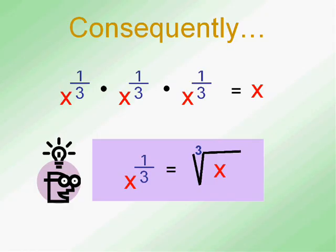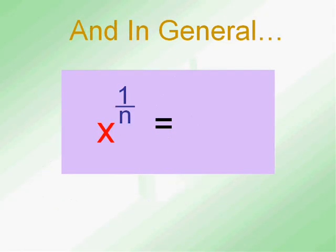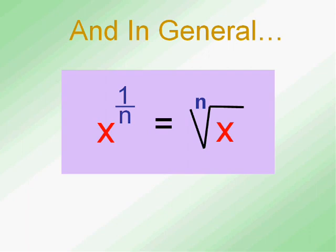Now we can use other fractions as well. So in general, x to the 1 over n — like one-fourth, one-fifth — is the nth root of x: the fifth root of x, the sixth root of x. That's why we say the fifth root or the third root of x, because we actually write a third.